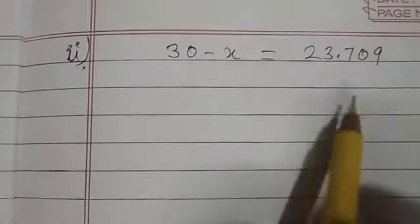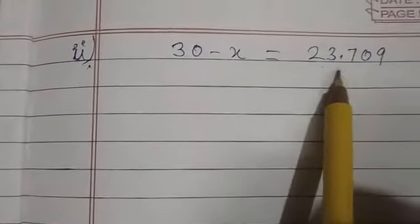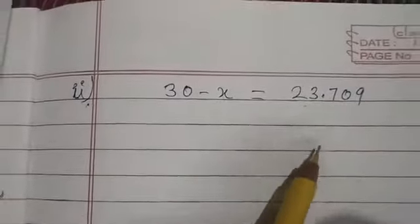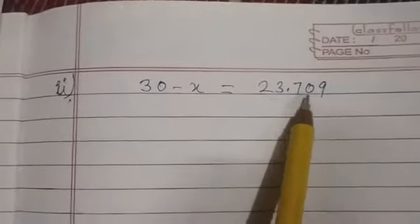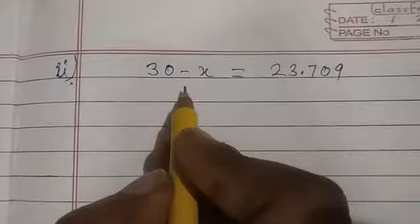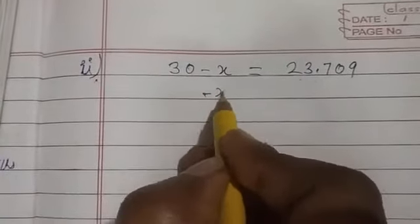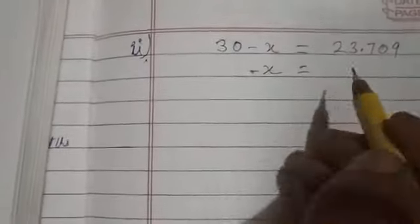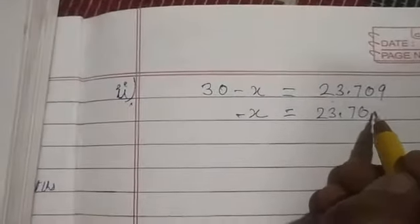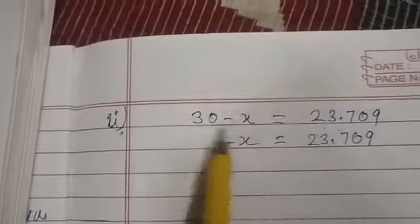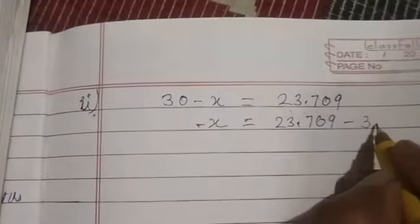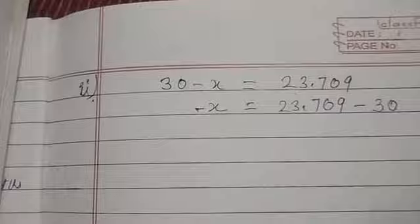How do we read this? 23 point - when digits are after decimal, we don't say it as 700, we say 709. Now we have to find out the value of x. Here minus x, rearrange it, x on the left side. Now 23.709 is positive on the left, going to right hand side what will it become? Negative. Minus 30. Clear. Now see.